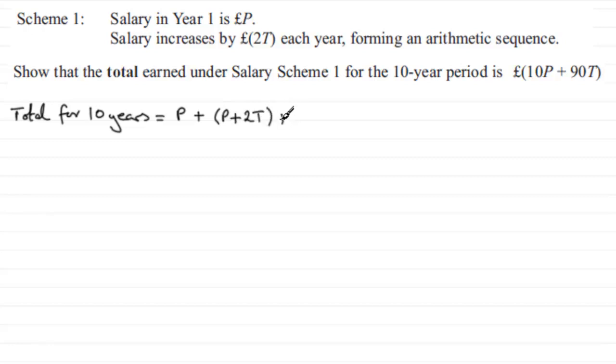Then in the third year, we're going to add to that p plus 2T plus another 2T, so in other words, p plus 4T. And it's going to carry on like that until we reach the 10th year, so we're going to need to add that last term on, the amount that we get in the 10th year.